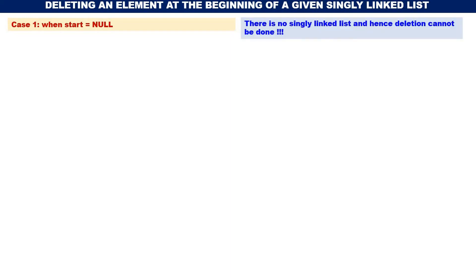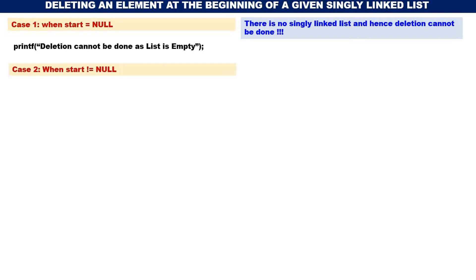Case 1: when start is equal to NULL. When start is NULL, there is no linked list at all. When there is no linked list, we cannot delete — there is no singly linked list and hence deletion cannot be done. Therefore, print a message: deletion cannot be done as list is empty.